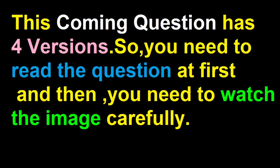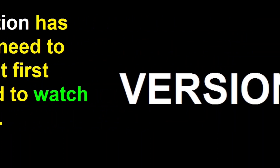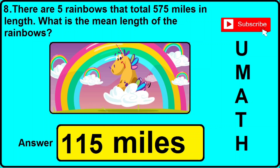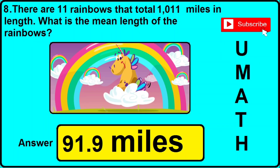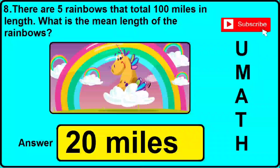Question number 8 has got 4 different versions or types. Read the question first, then watch the image, then check the options. In version 1: there are 5 rainbows that total 575 miles in length — what is the mean length? The correct answer is 115 miles. In version 2: there are 5 rainbows totaling 100 miles — the correct answer is 91.9 miles. In version 3, the same setup gives a correct answer of 20 miles.